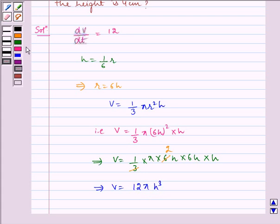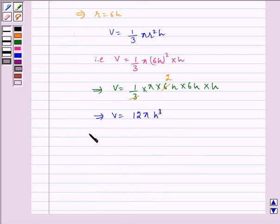Now differentiating it with respect to t we get dV/dt = 12π × 3h² × dh/dt.